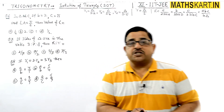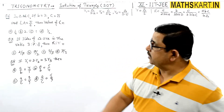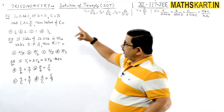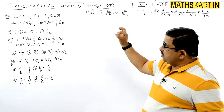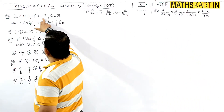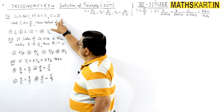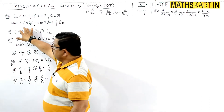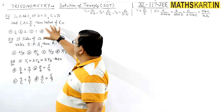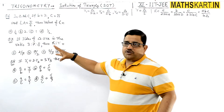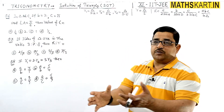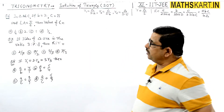Question number 6, 7, and 8 — three more questions. In triangle ABC, if b=2, c=√3, and angle A = π/6, then find the value of R. यह बहुत simple question है — अगर हमें formula सामने दिख रहे हैं तो हम सारी values निकाल देंगे।